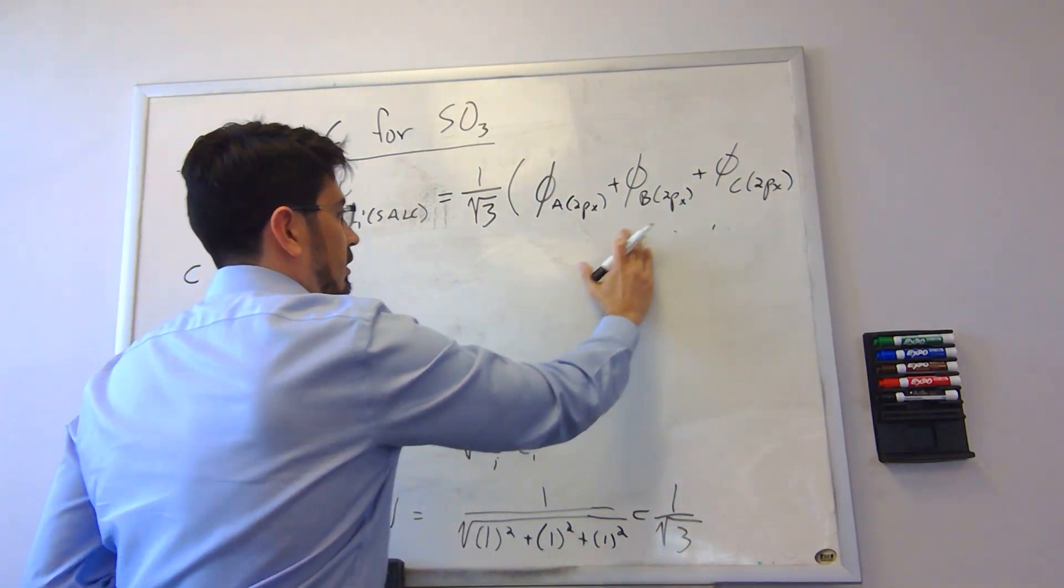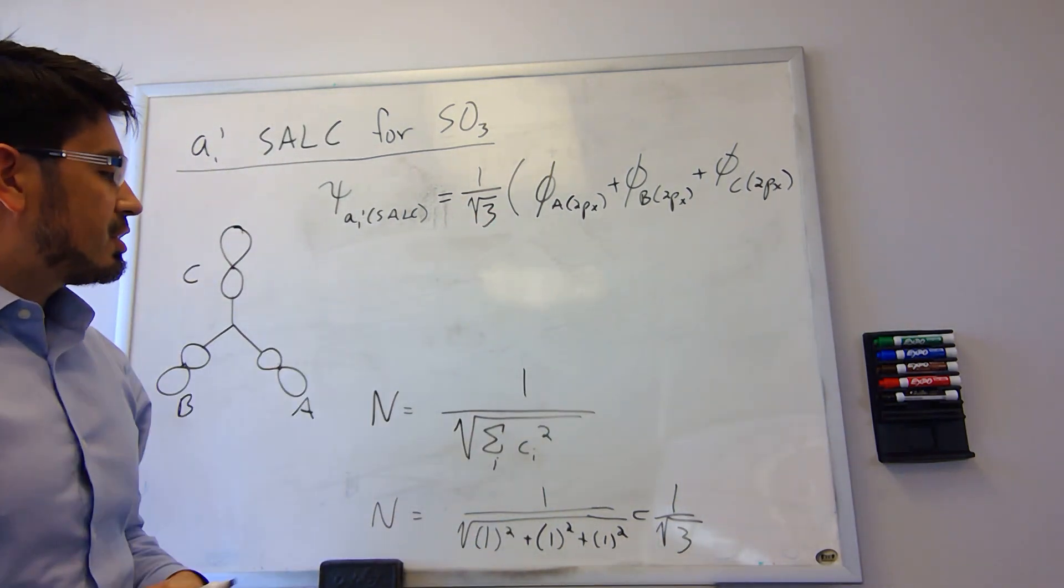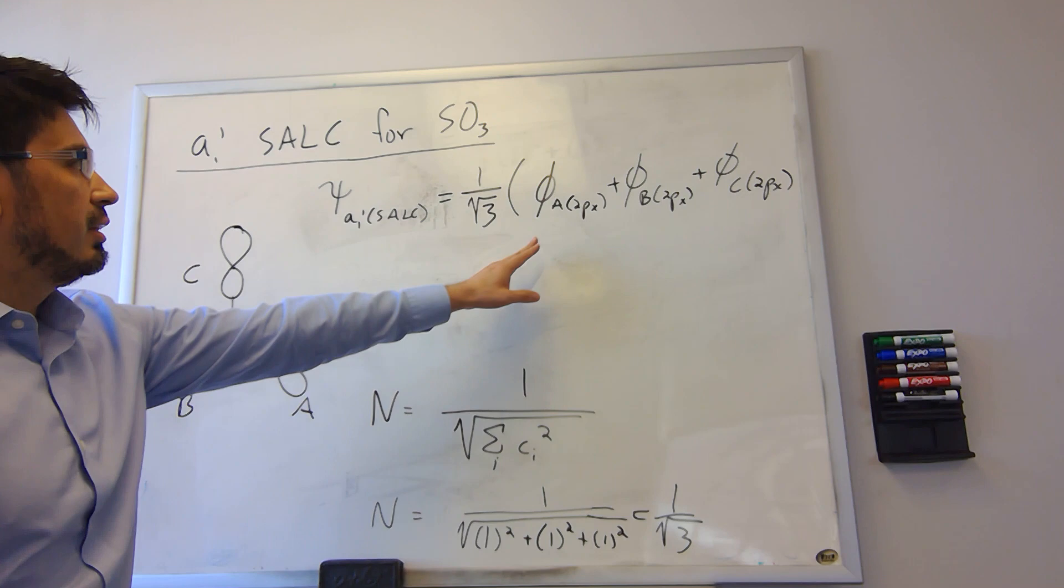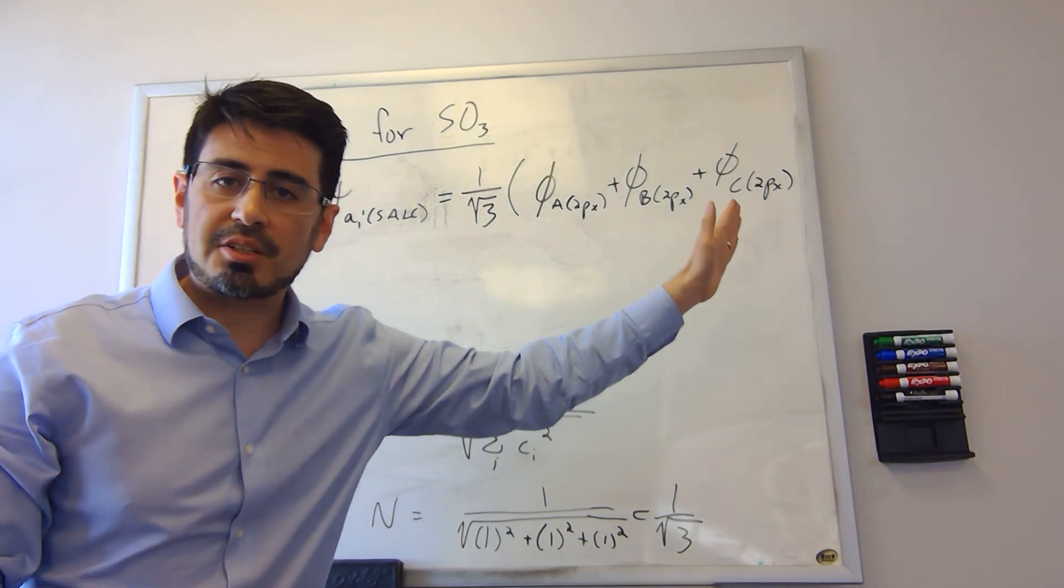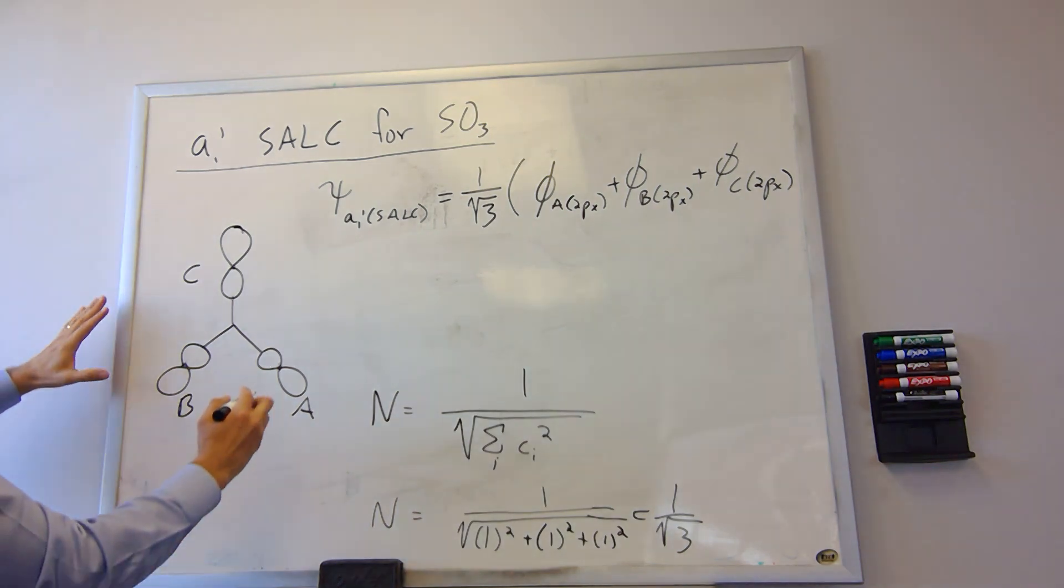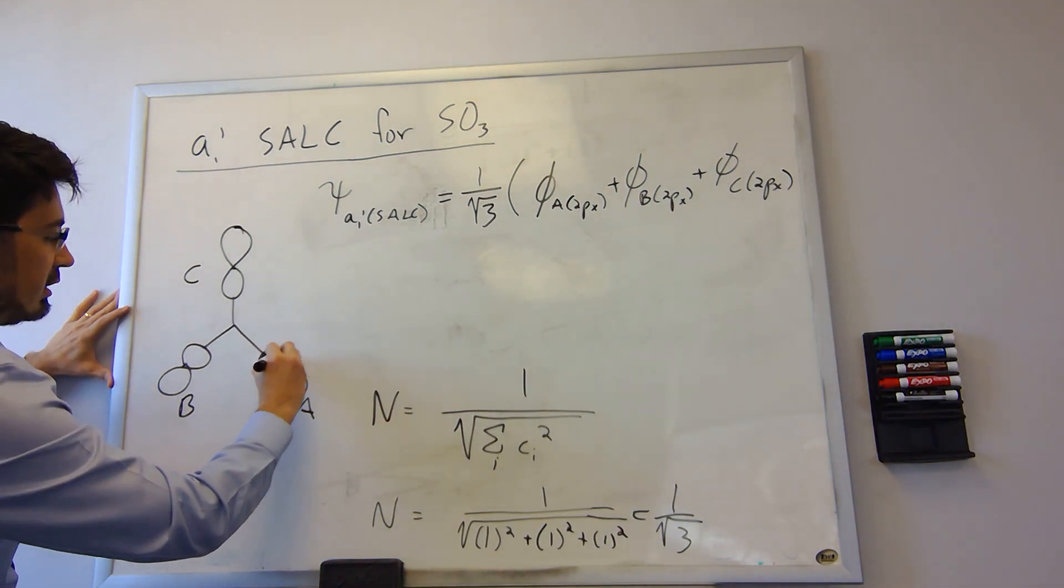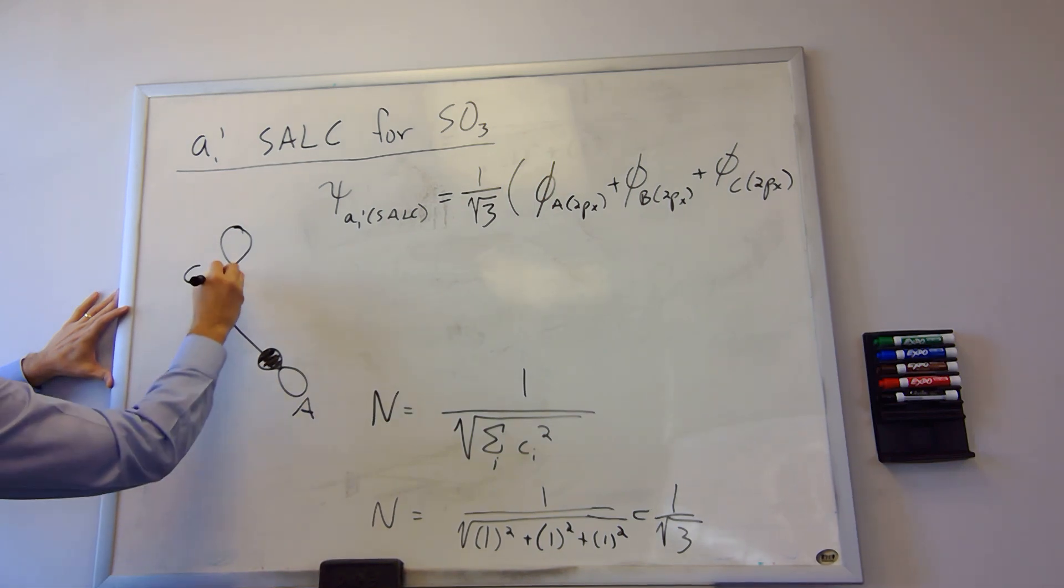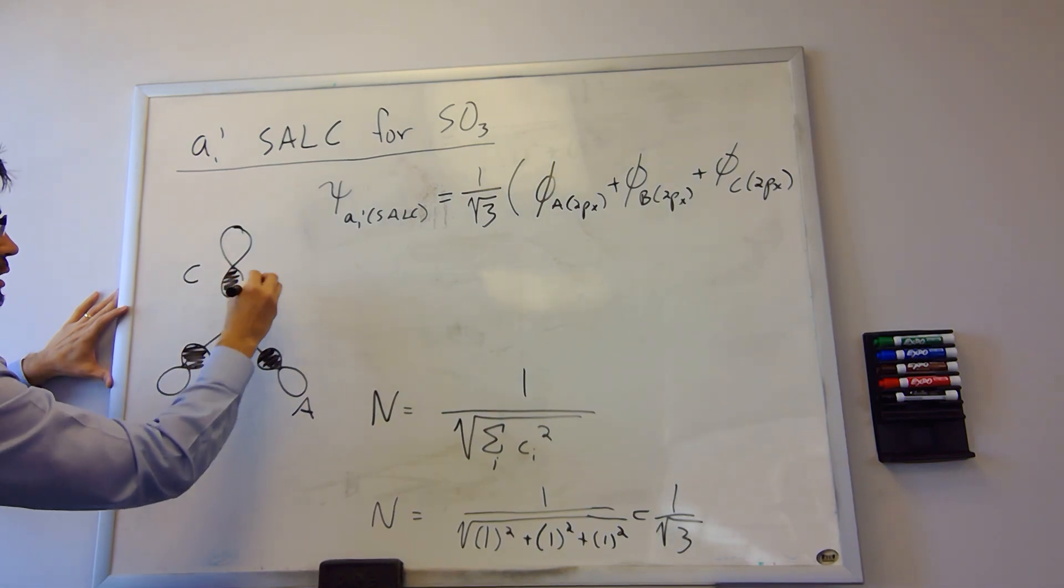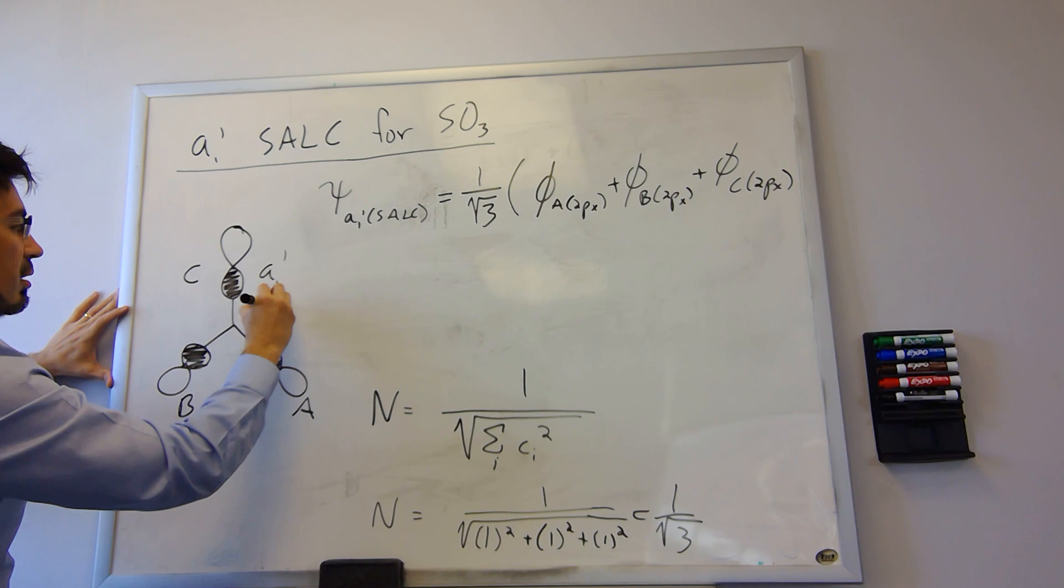All right, so now I have my function nicely normalized. What we can see here, it's just the symmetric addition of all the 2px orbitals. So basically, they would be filled in like this, and this is our A1 prime SALC.